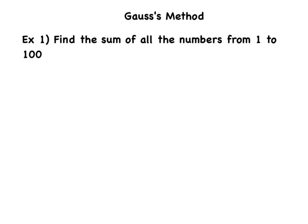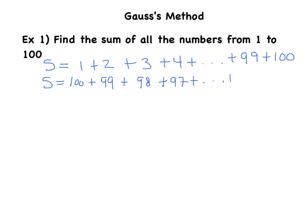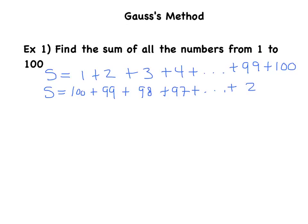So this is what he did. He said the sum of the first hundred numbers can be written like this: 1 plus 2 plus 3 plus 4, etc., plus 99 plus 100. And he said I'm going to call that sum S. But then he said, well I could also write it like this. S is the same as, just starting with 100, 100 plus 99 plus 98 plus 97, and just going down instead of going up. Plus 2, plus 1.